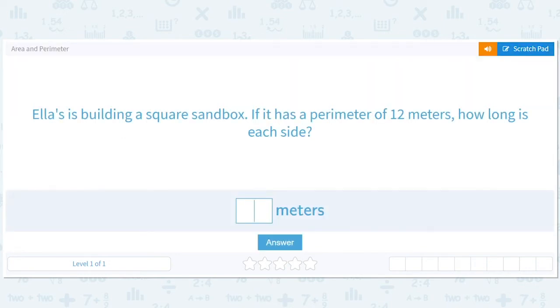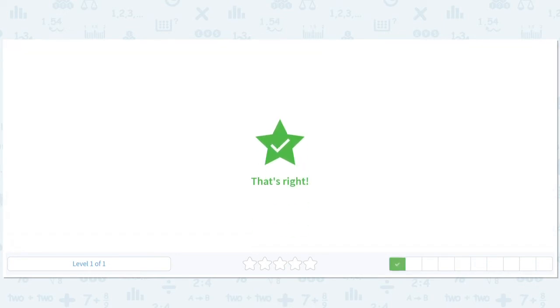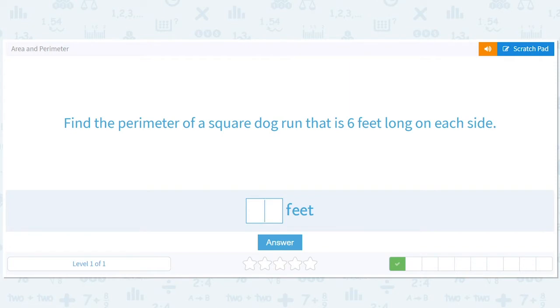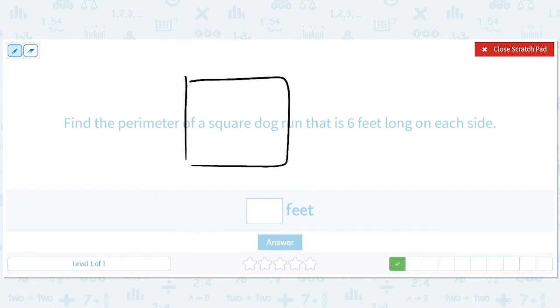So 3. Find the perimeter for a square dog run that is 6 feet long on each side. So this is the opposite question. So now we have 6, 6, 6, 6.